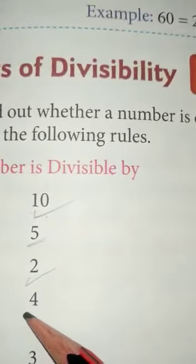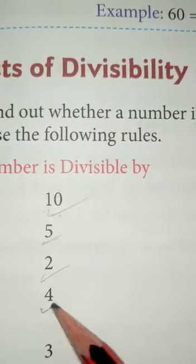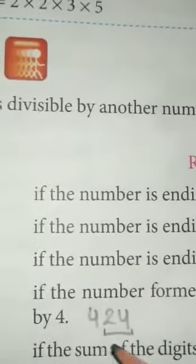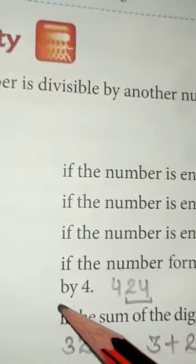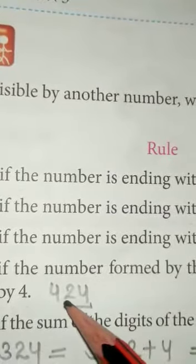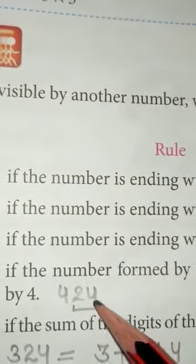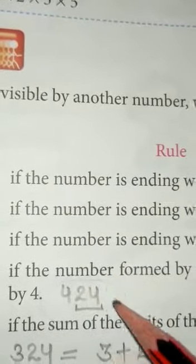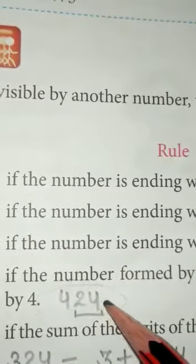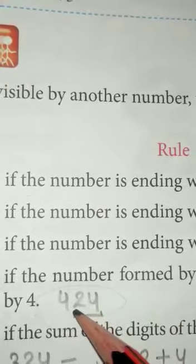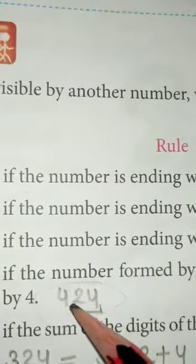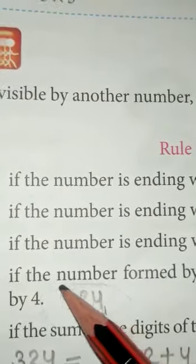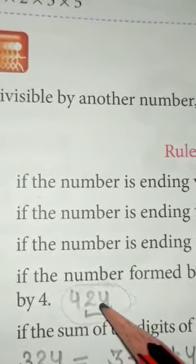Next is the divisibility rule to check whether a number is divisible by 4. The rule is: if the last 2 digits of the number are divisible by 4, it means that whole number is divisible by 4. Like 424 — the last 2 digits are 24, and 24 comes in the table of 4 (4 × 6 = 24), so 424 is divisible by 4.